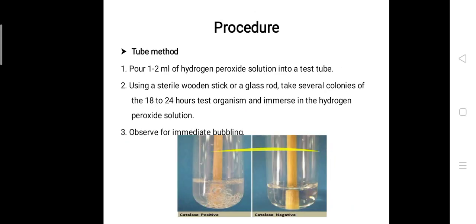Next we'll discuss the tube method. For the tube method, you're going to need a test tube, which is obvious—the name itself suggests tube method. You have to pour one to two ml of hydrogen peroxide solution into a test tube.